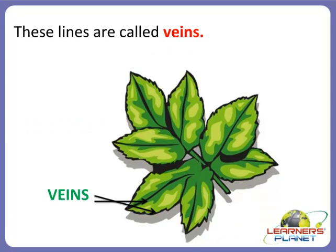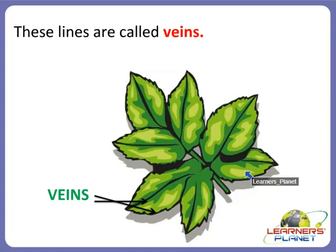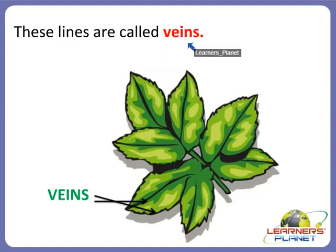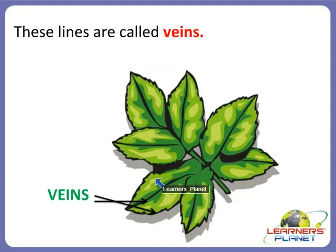If you look at a leaf carefully, you will find a lot of lines running across it. These lines are called veins. So the flat surface of a leaf is called the leaf blade, and the lines running across the leaf are called veins.